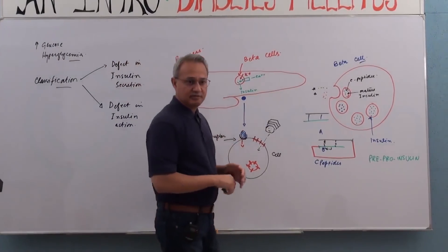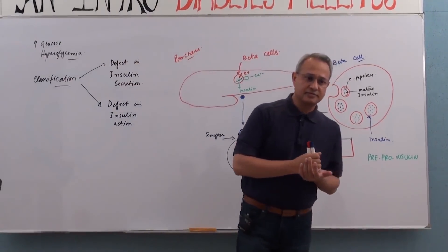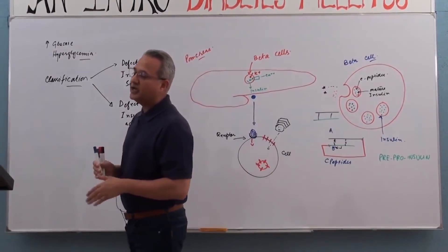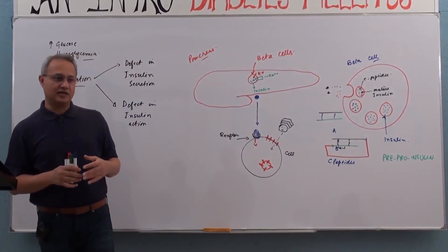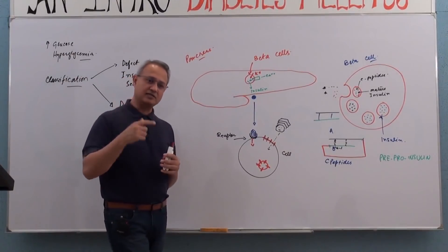What really happens? Any one mechanism? Why is extra glucose, why is hyperglycemia a bad thing? Just tell me one mechanism.